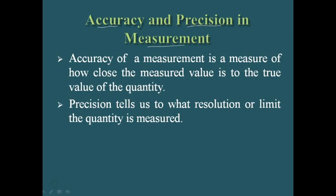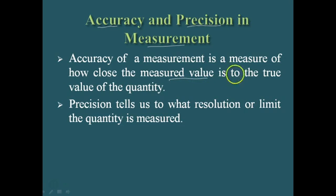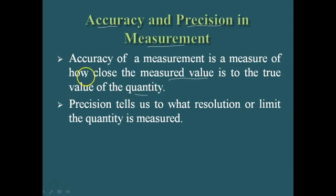Accuracy of a measurement is a measure of how close the measured value is to the true value of the quantity. It should be comparable with the true value — that is what we call accurate. If the result is very close to the true value, we say the result is very accurate.